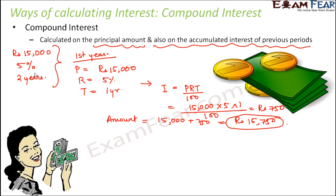But you have kept the money for two years, so what happens in the second year? In simple interest, the principal amount in the second year remains the same — Rs. 15,000 — and that is why we directly put T = 2. But in compound interest, the principal amount for the second year will change.